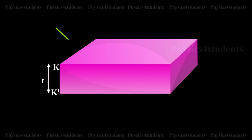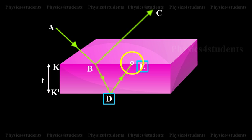A ray of monochromatic light AB incident on the surface K of the film is partly reflected along BC and partly refracted into the film along BD. At the point D on the surface K', the ray of light is partly reflected along DE and partly transmitted out of the film along DG.